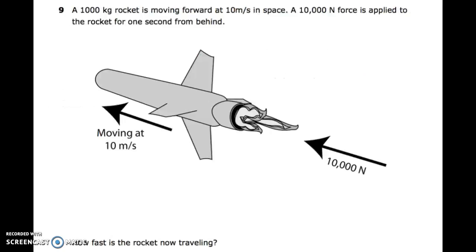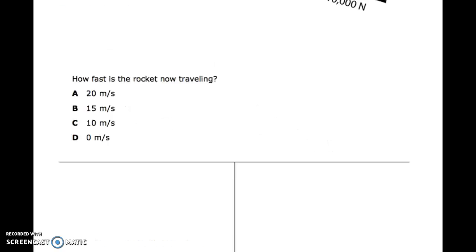Number nine: a 1,000 kilogram rocket is moving forward at 10 meters per second in space. A 10,000 newton force is applied to the rocket for one second from behind. How fast is the rocket now traveling?